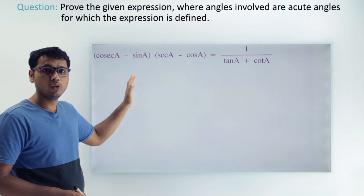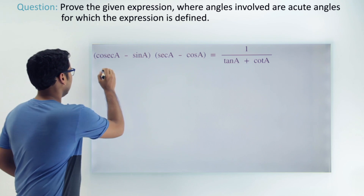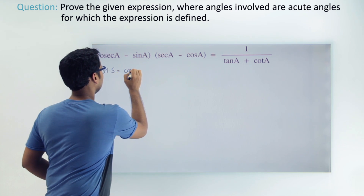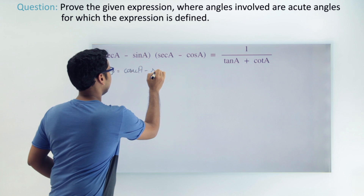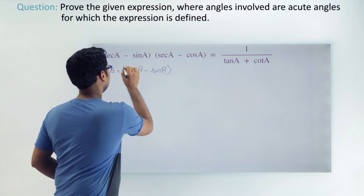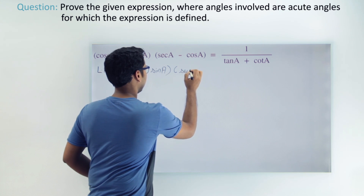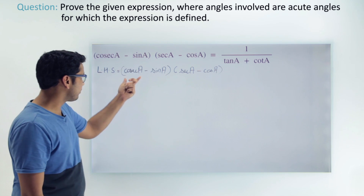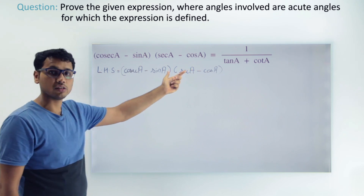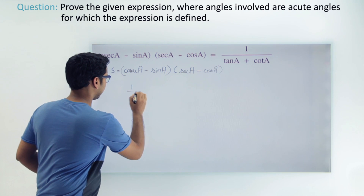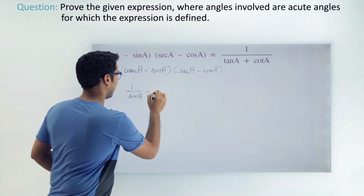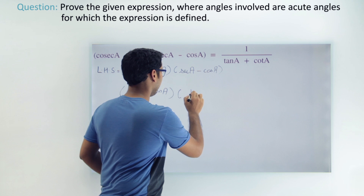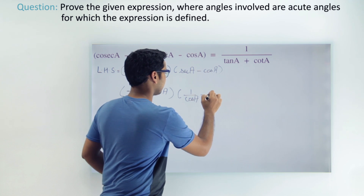Let's change the LHS into sin and cos. If I write the LHS as (cos a minus sin a) times (sec a minus cos a), I'll break cosec a into 1/sin a and sec a into 1/cos a. So this becomes (1/sin a minus sin a) times (1/cos a minus cos a).